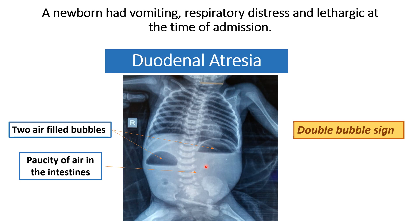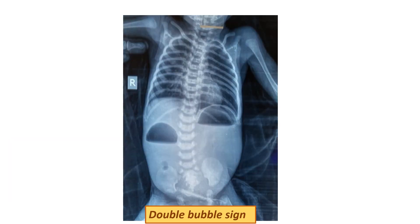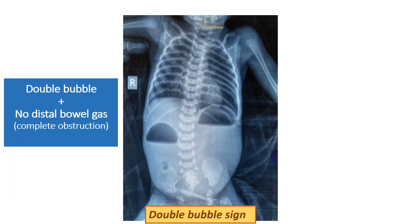This is suggestive of duodenal atresia — the diagnosis for this X-ray is duodenal atresia. Whenever there is a double bubble sign with no distal bowel gas, as in this X-ray, it is suggestive that the patient is having complete obstruction at the level of the duodenum.